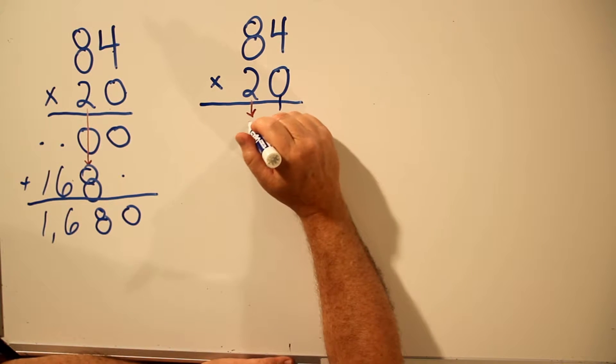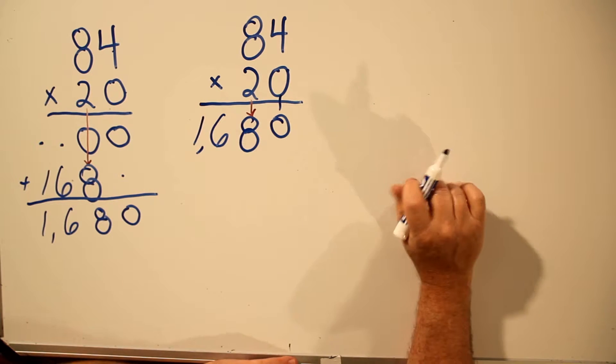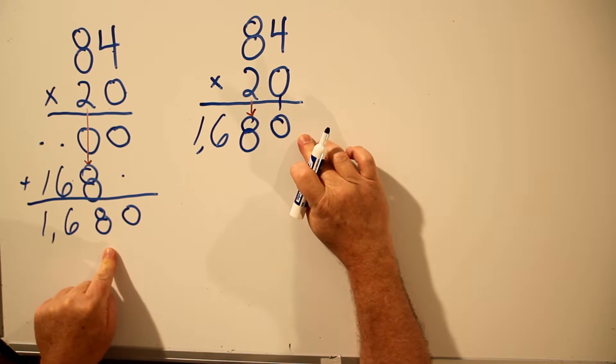2 times 4 is 8. 2 times 8 is 16. So you get the same answer without having to create the second row and do the special addition.